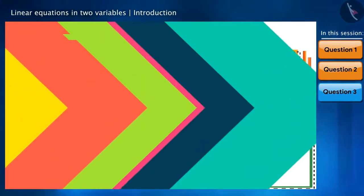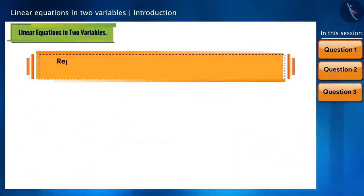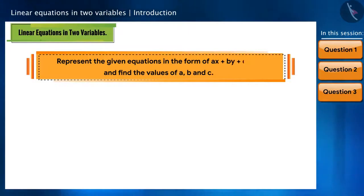Let's go ahead and see the next question. Represent the given equations in the form of ax plus by plus c is equal to 0 and find the values of a, b and c.